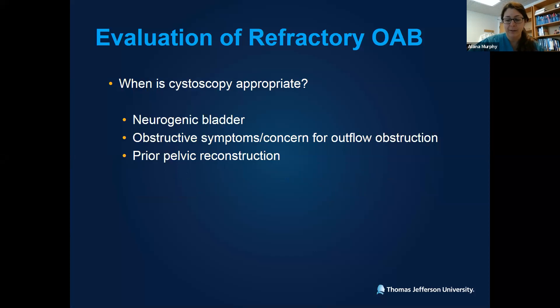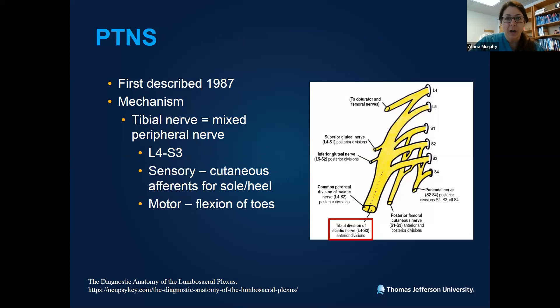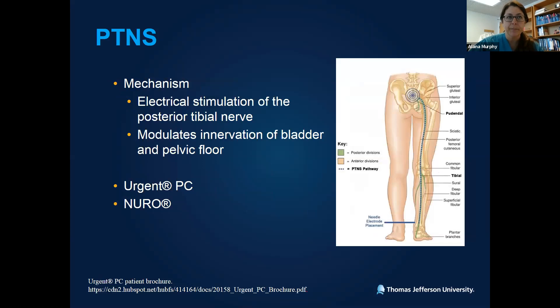Let's jump into PTNS — it's actually not a new treatment modality; it was first described in 1987. PTNS relies on stimulation of the posterior tibial nerve, which is part of the tibial nerve, a mixed peripheral nerve with roots from L4 to S3. It has sensory and motor components — sensorily it provides cutaneous efference for the sole and heel, so patients may note a tingling sensation in that distribution during treatment. It also provides flexion of the great toes, which is expected during stimulation. The mechanism is retrograde stimulation of the posterior tibial nerve, providing neuromodulation of the innervation for the bladder and pelvic floor muscles. We have two current systems available in the US: Urgent PC and Nuro, made by Medtronic.